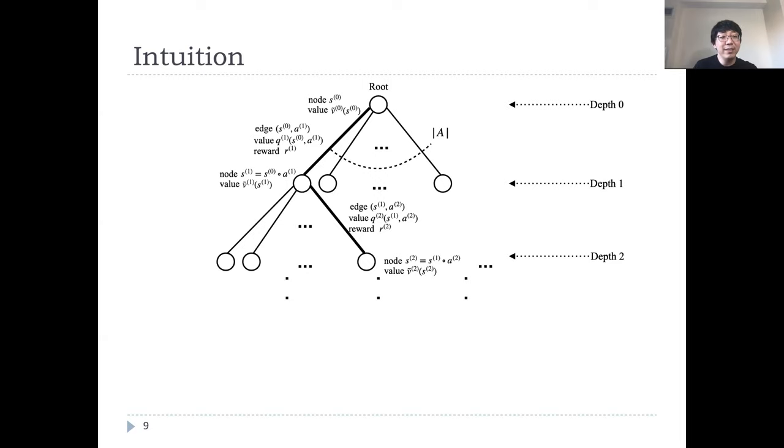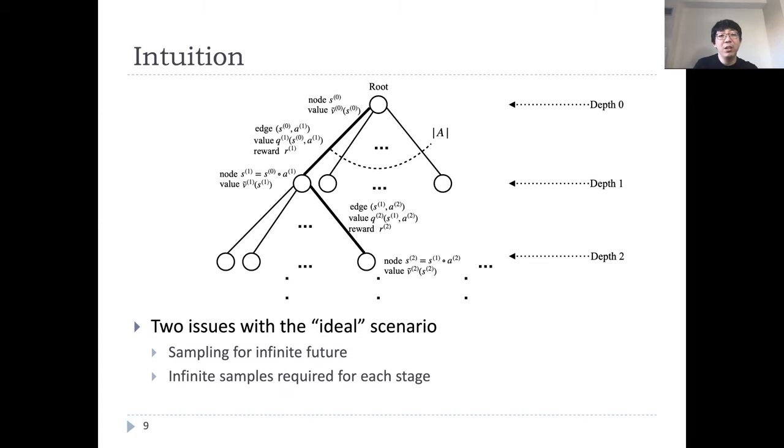Now, the total reward depends on the future actions. So, naively, we can repeat this process for the next step, like depth 2, and the next, next step, as shown in this picture. This expands to a lookahead tree. This is great, but there are some issues. We cannot sample for infinite future. That is, we cannot really build an infinite depth tree. Also, we don't have infinite samples to spend at each stage to get an accurate estimate of the reward.